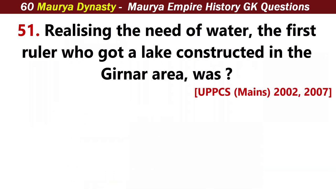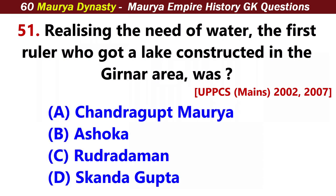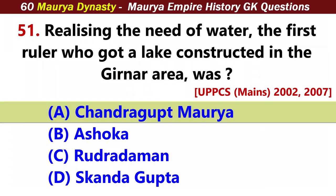Realizing the need for water, the first ruler who got a lake constructed in the Girnar area was? Answer A: Chandragupta Maurya.